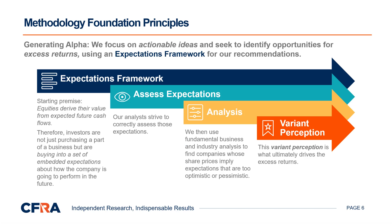We start with the premise that equities derive their value today from expected future cash flows. While this is not controversial in itself, we do think that many investors can forget that they are not just purchasing a part of a business, but they're buying into a set of embedded expectations about how the company is going to perform in the future. We then strive to correctly assess what those expectations currently are for a given equity and its current price — in other words, we're trying to answer: if I were to purchase shares today at this price, what would the company have to achieve in the future to justify this price? We then bring in our fundamental business and industry analysis to gauge whether those expectations are achievable. In particular, we want to find companies whose share prices imply expectations that are either overly optimistic or pessimistic. This variant perception from the market is what ultimately drives the excess returns, and in order to achieve above-average returns, we believe you must have an opinion that is different from the general average.